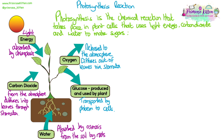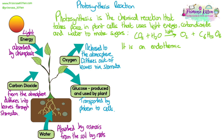Photosynthesis is the chemical reaction that takes place in plant cells that uses light energy, carbon dioxide, and water to make sugars. The symbol equation is: carbon dioxide plus water, with light energy over the arrow, producing oxygen plus glucose, which has the symbol C6H12O6. It's an endothermic reaction because it takes in light energy.